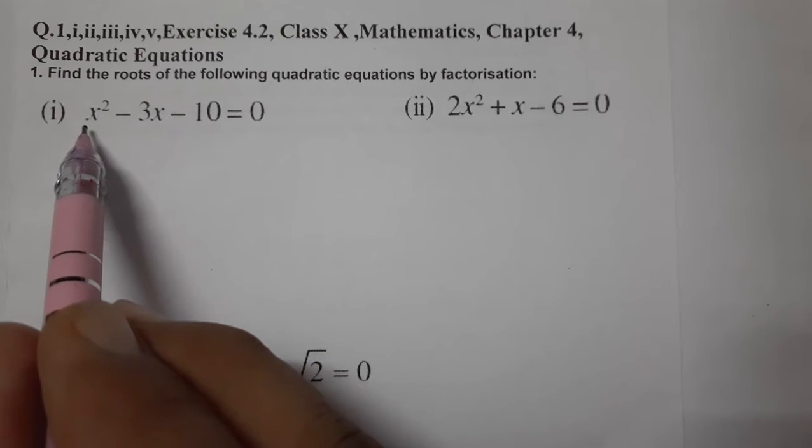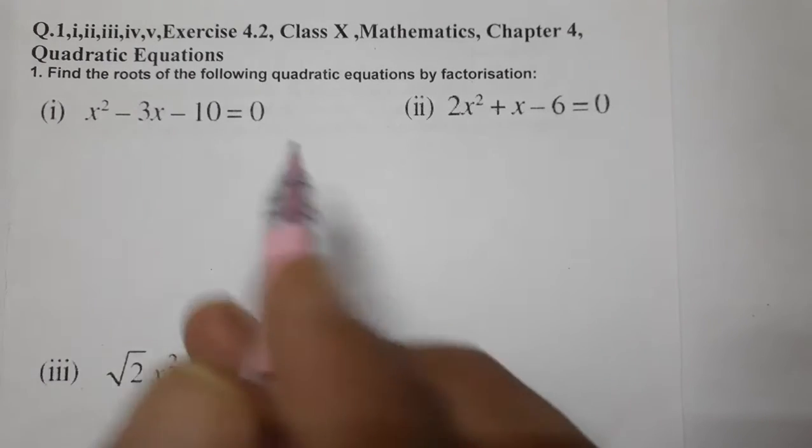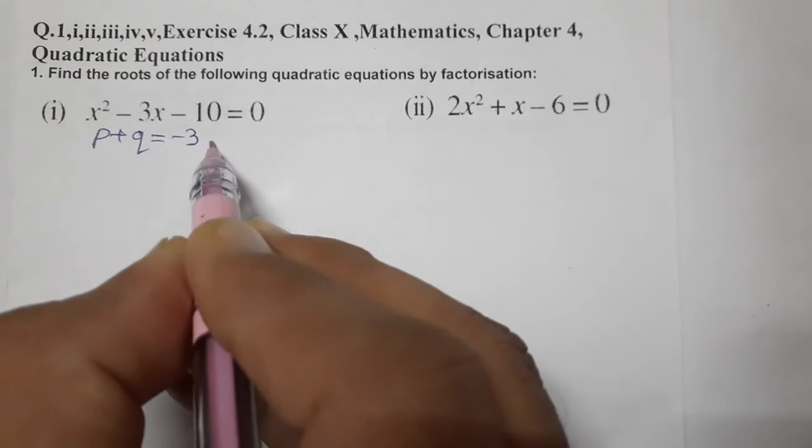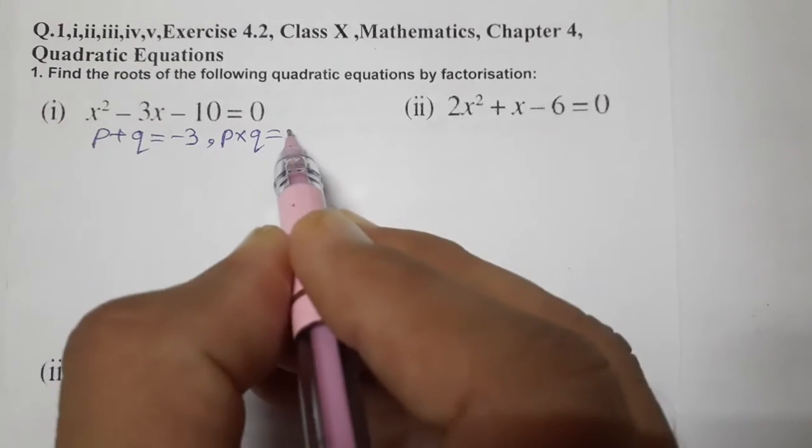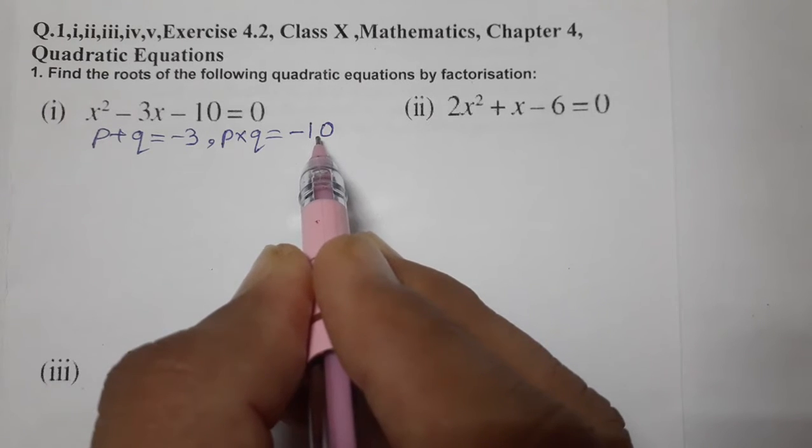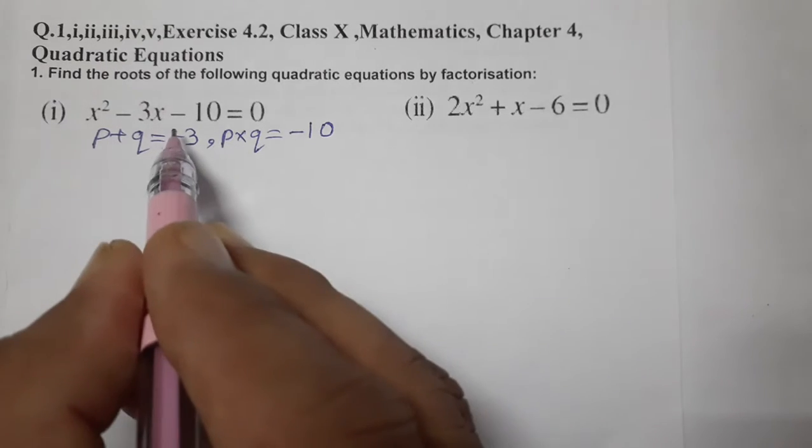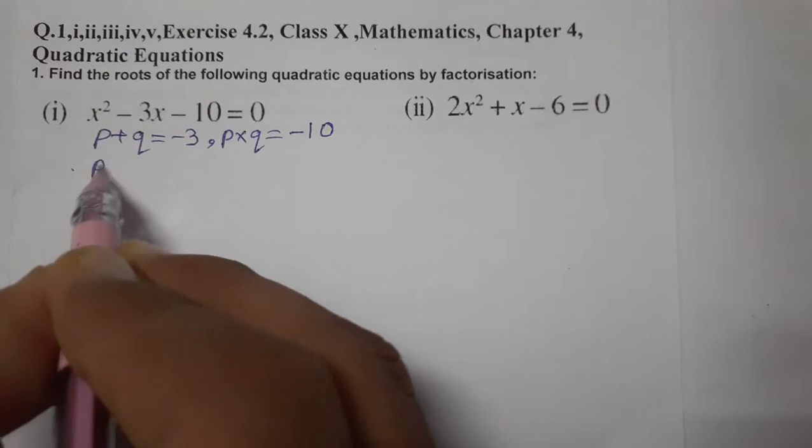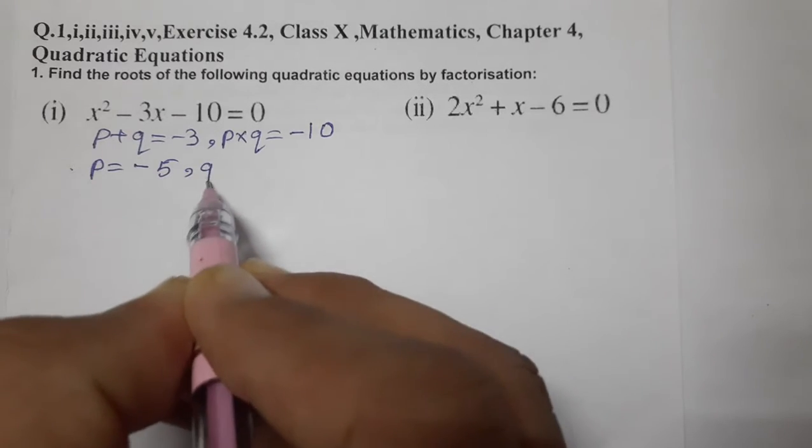Find the roots of the following quadratic equations by factorization. We have to do middle term split. Let's start with x² - 3x - 10 = 0. We have to think of two numbers: on adding we need -3, and on multiplying we need a times c, which is 1 × (-10) = -10. Take the factors of 10, which are 2 and 5. We need -3, so -5 + 2.